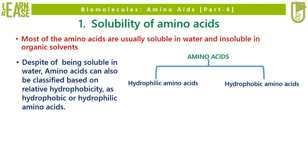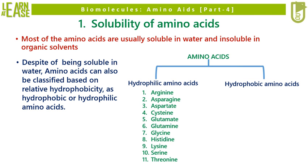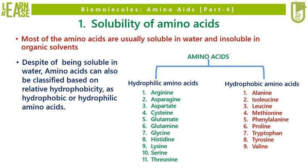The classification of amino acids based on their relative hydrophobicity is shown here. Arginine, asparagine, aspartate, cysteine, glutamate, glutamine, glycine, histidine, lysine, serine, and threonine are categorized as hydrophilic amino acids. Whereas alanine, isoleucine, leucine, methionine, phenylalanine, proline, tryptophan, tyrosine, and valine are categorized as partially hydrophobic amino acids.